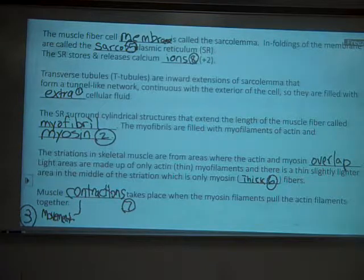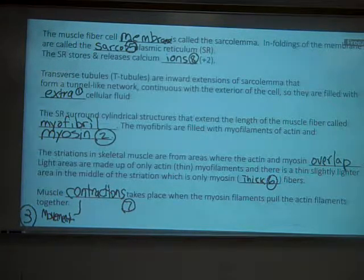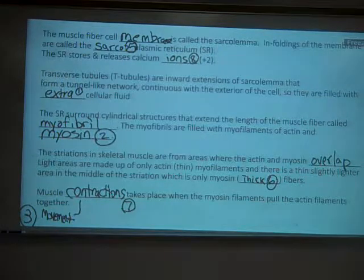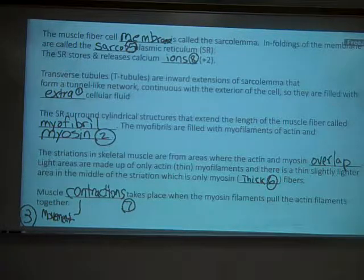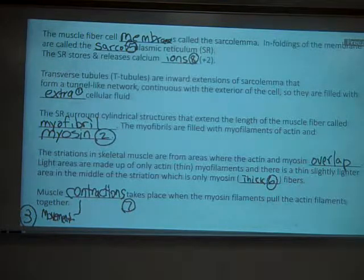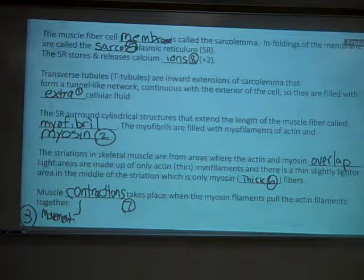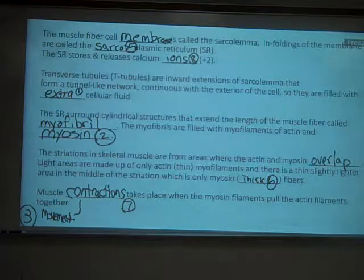You just have the thinner levels of your actin fibers, myofilaments, and then when you have the middle between those is kind of a slightly darker area because it's the thick fibers, that's going to be your myosin filaments that will be coming together.